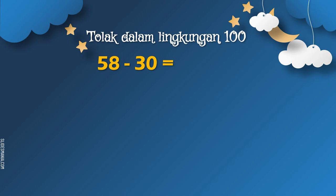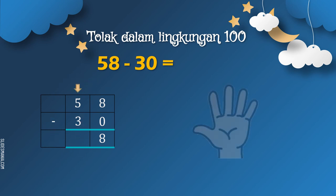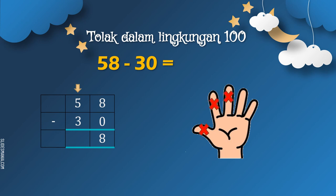Contoh yang terakhir: 58 tolak 30 sama dengan... Kita tulis dalam bentuk lazim: 58 tolak 30. Buatkan 2 garisan. Kita selesaikan dulu di bahagian rumah sa iaitu 8 tolak sifar. Disebabkan sifar tak ada nilai, jadi 8 tolak sifar bersamaan dengan 8 — tak perlu tolak pun, terus tulis 8. Kita selesaikan pula yang rumah puluh: 5 tolakkan dengan 3. Keluarkan 5 jari, kita tolakkan dengan 3 — tutup 3: 1, 2, 3. Sekarang kita kira pula berapa lagi jari yang tinggal: 1, 2. Jadi, 5 tolak 3 sama dengan 2. Jadi, 58 tolak 30 sama dengan 28.